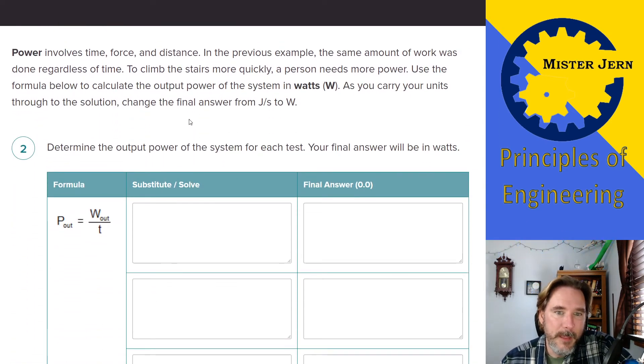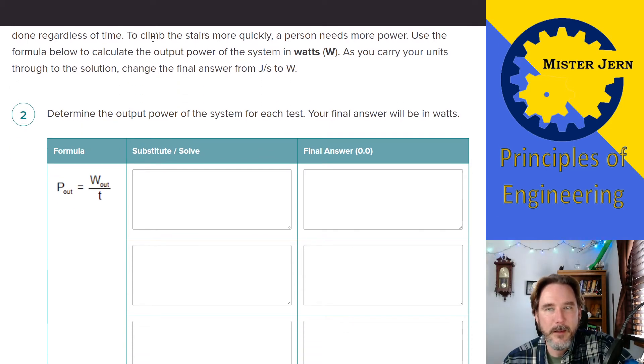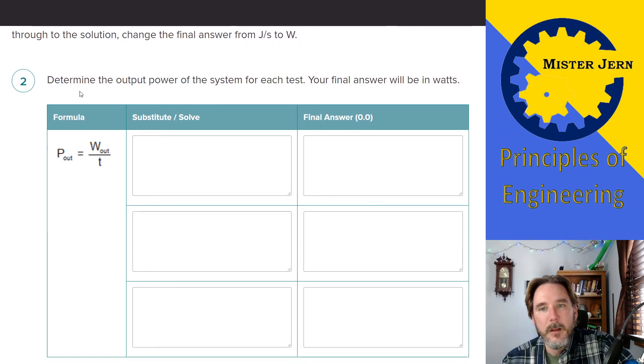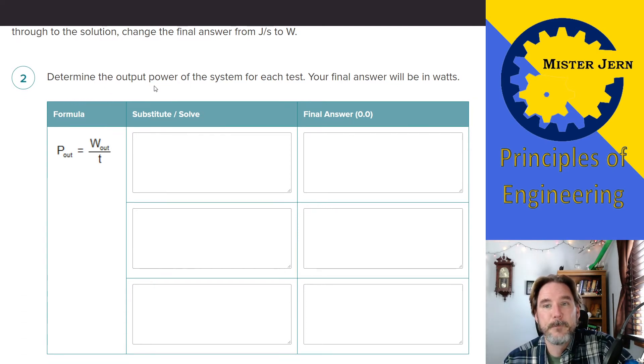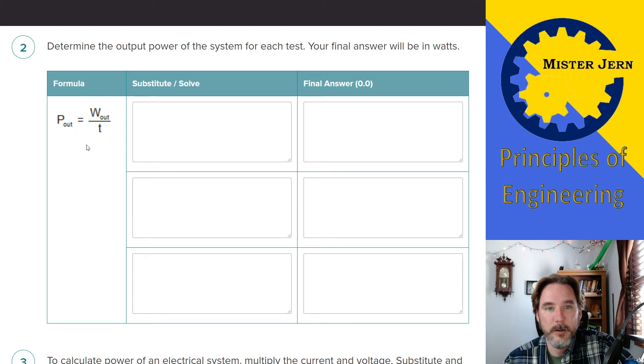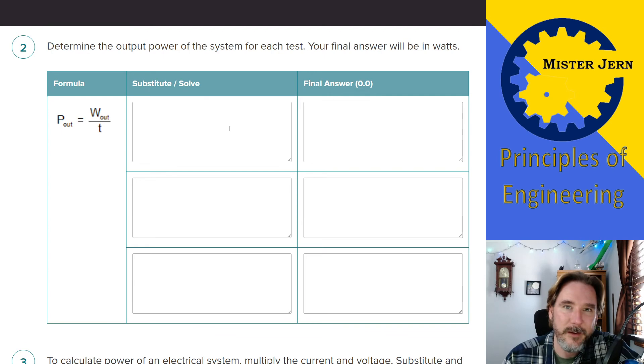Then we're going to get into power. It just reminds you about what power is, going back to the stairs example. What you're going to do is determine the power output of the system for each test. Your final answer will be in watts. So here's the equation for power. All you're going to do is take the output work, the work that was done, divided by the time, substitute, solve. Make sure you follow the steps or write down each step. Don't just write down the answer because you could just do it in your head or your calculator. No. I'm looking for the process that you followed to do this.